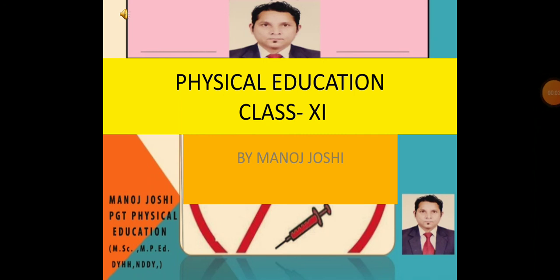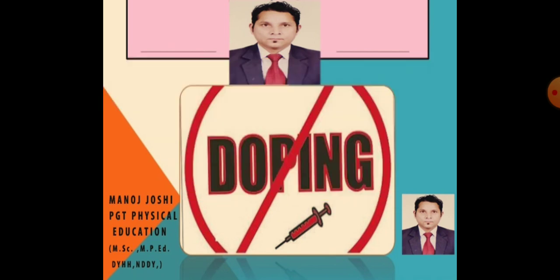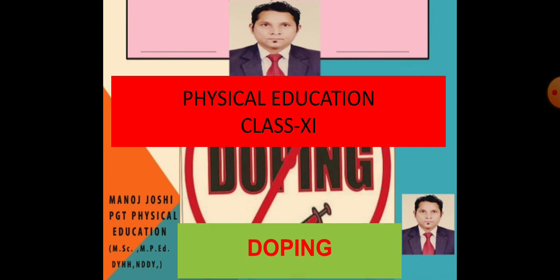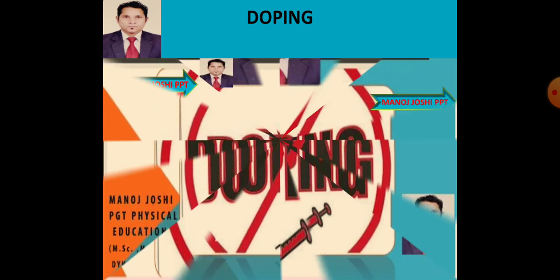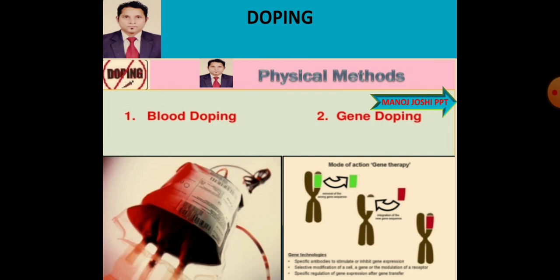Good morning. We are continuing the lesson on doping. We have discussed the various performance-enhancing substances. Today the topic is the physical method of doping. There are two methods of doping: first is the use of substances, and second is physical methods, in which the person uses physical means to enhance performance in sports.